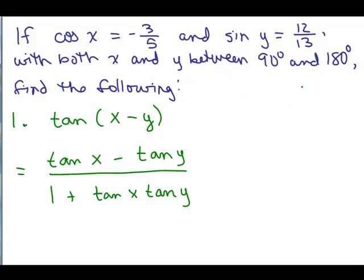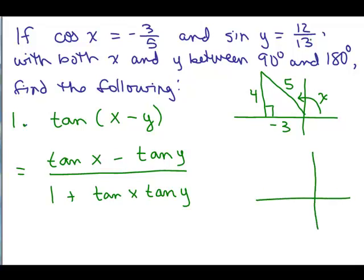So let's just draw each angle. So x in quadrant 2, if we've got a negative 3 fifths, this would be negative 3, and this would be 5, and then you could use the Pythagorean theorem or you might recognize this as the 3, 4 triangle, that would be 4. So this is x. All right, now let's find y. The sine of y is 12 thirteenths. So that means the y value is 12 and R is 13 and that is my angle y. And hopefully you recognize this as the 5, 12, 13, but if not you can use the Pythagorean theorem. So now by looking at the picture, I can tell what the tangent of x is, the tangent of y is, and just go ahead and plug them right into this formula.